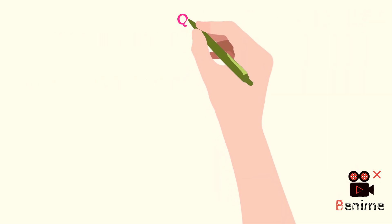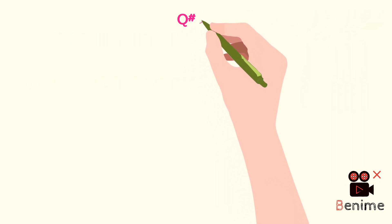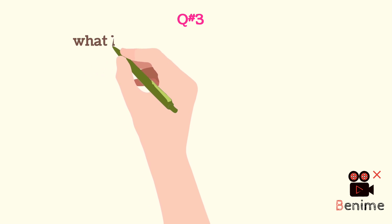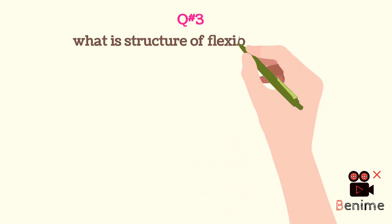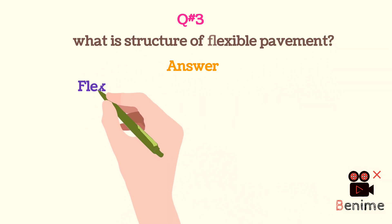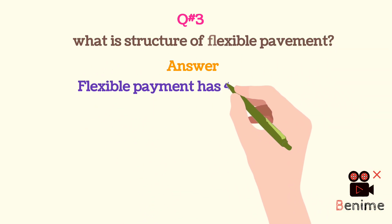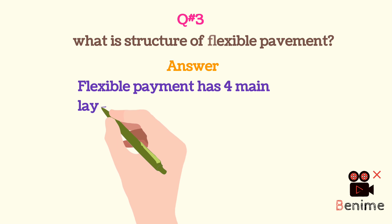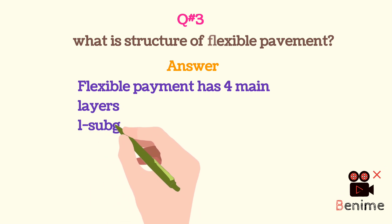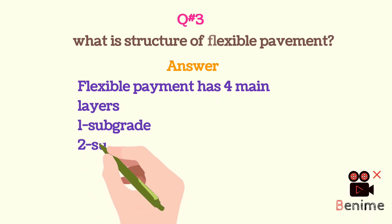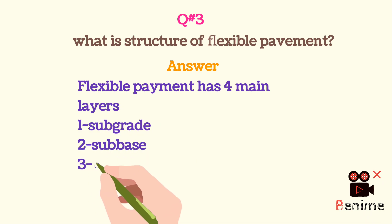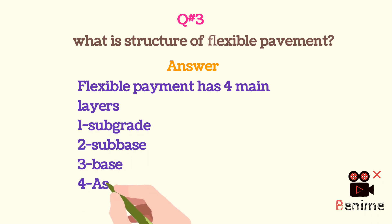Question 3: What is the structure of flexible pavement? Flexible pavement has 4 main layers: 1) subgrade, 2) subbase, 3) base, and 4) asphaltic course.